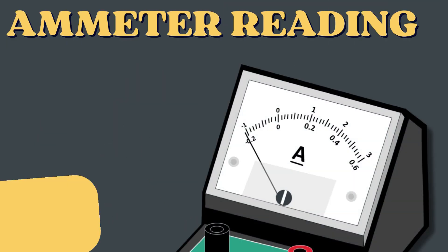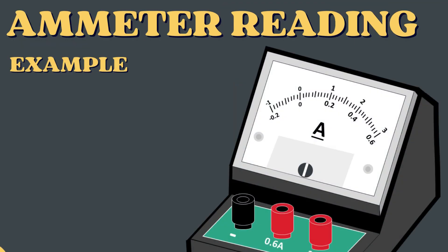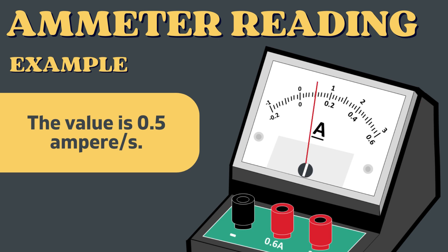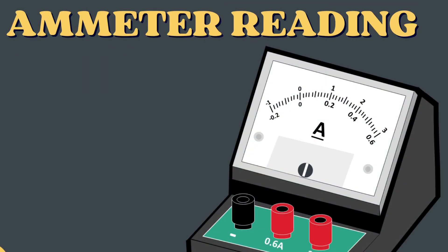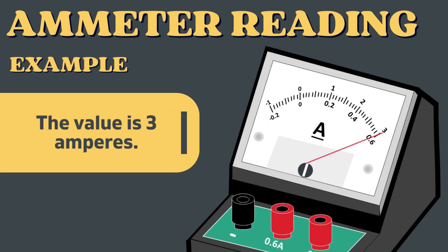You also need to know the range to get the value from each line. For example, if the pointer is between zero and one, the value is 0.5 amperes. In example two, if the pointer is between two and three, the value is 2.2 amperes. In example three, if the pointer points exactly at three, the answer is three amperes.